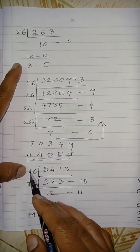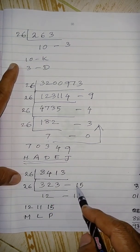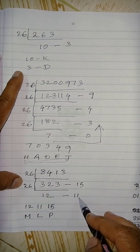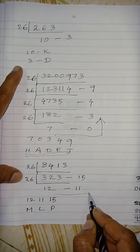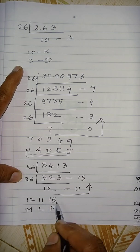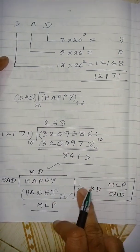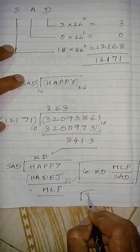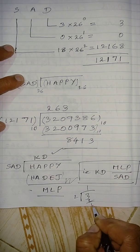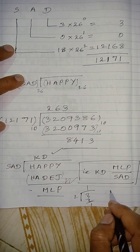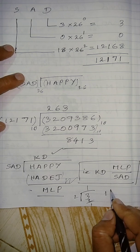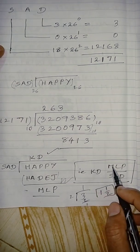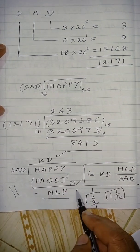So for the final remainder 8,413: divide by 26, remainder 15. Divide again by 26: 26 into 12 gives remainder 11. Finally 12. So take in order: 12, 11, 15 — corresponding labels M, L, P — that is MLP. This can be written as a mixed fraction. For example, like 3 divided by 2 with remainder 1 would be written as 1 and 1/2. So similarly our final answer is KD MLP divided by SAD.